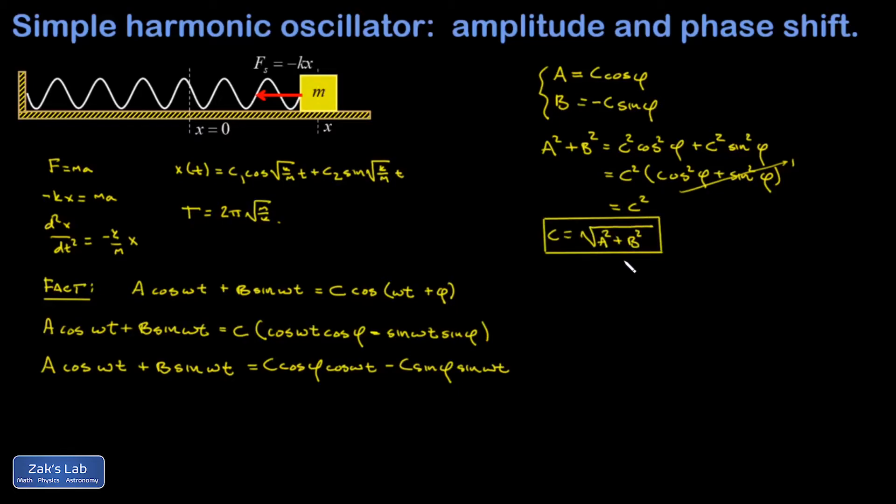Now the standard trick for getting the phase angle φ is to take my second equation and divide by the first, and that gives me a tangent of φ on the right-hand side.